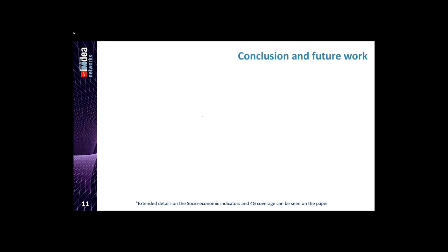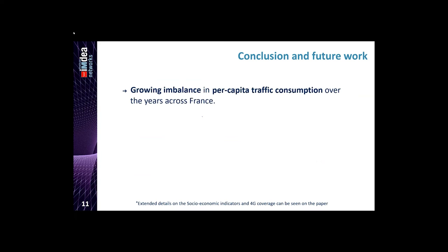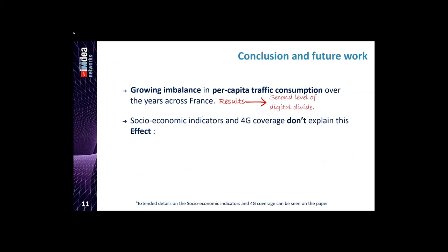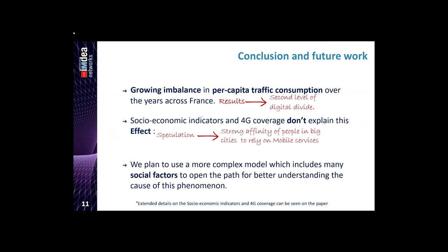Finally, from our whole analysis we conclude there is a growing imbalance in per capita traffic consumption in France across the years. We also conducted an experiment where socioeconomic indicators and 4G coverage were not able to explain the cause of this effect, which leads us to speculate that people in big cities have more affinity to use mobile and digital services. In future work we will use more complex models with more social indicators, opening the path to understanding the cause of this phenomenon.